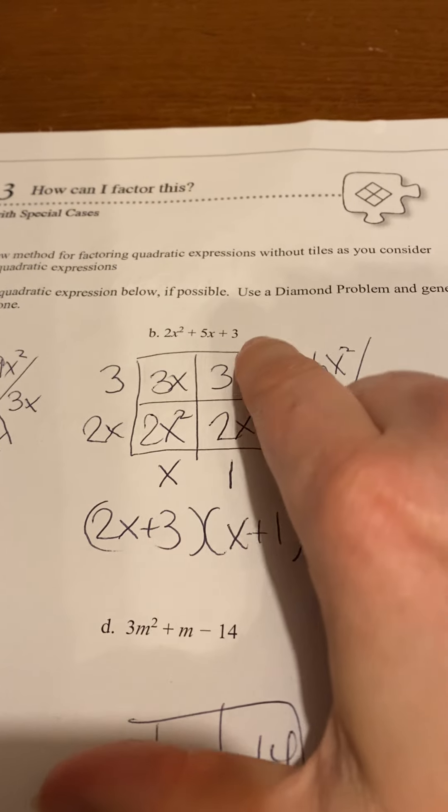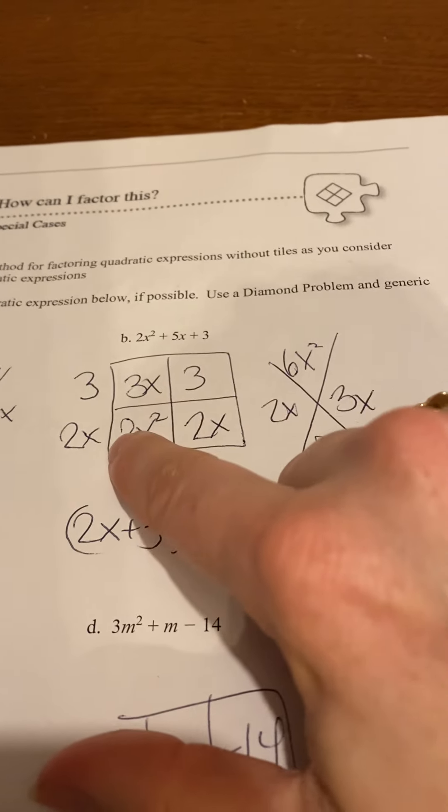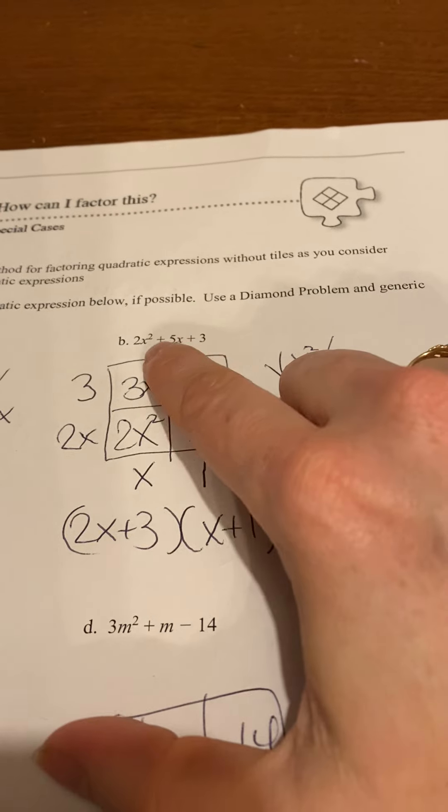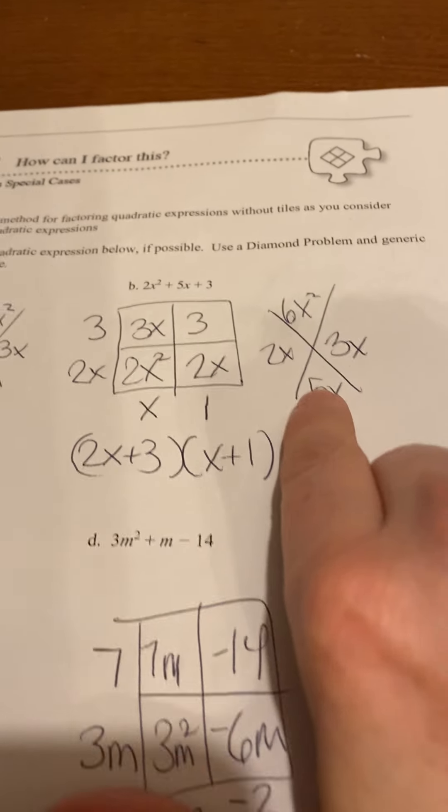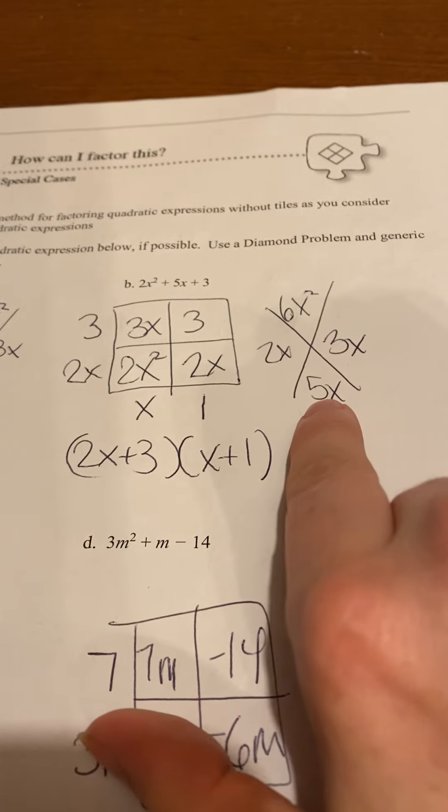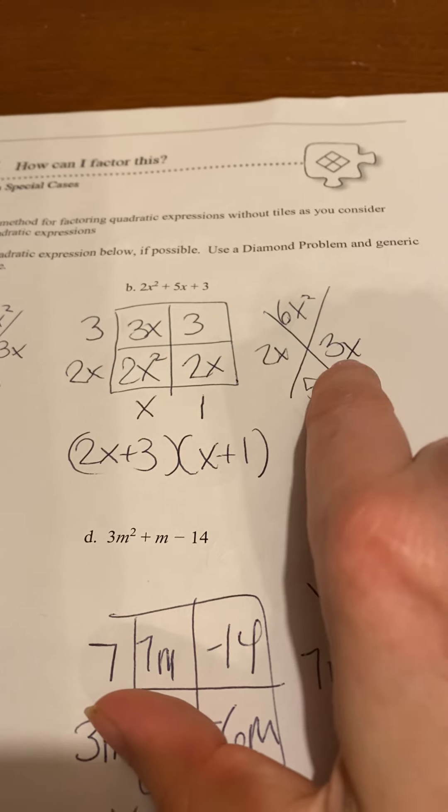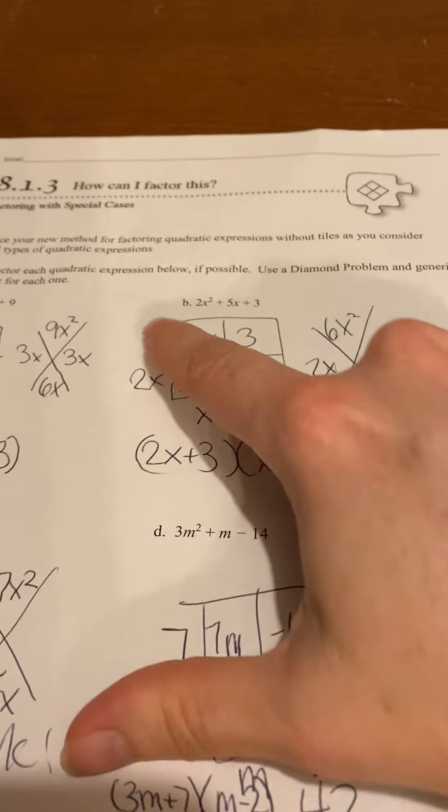Now to figure out what these are, remember you want to multiply to be 6x squared and add to be 5x. Well, what two things multiply to be 6x squared that add to be 5x? 2x and 3x. So those are going to be what has to go here.